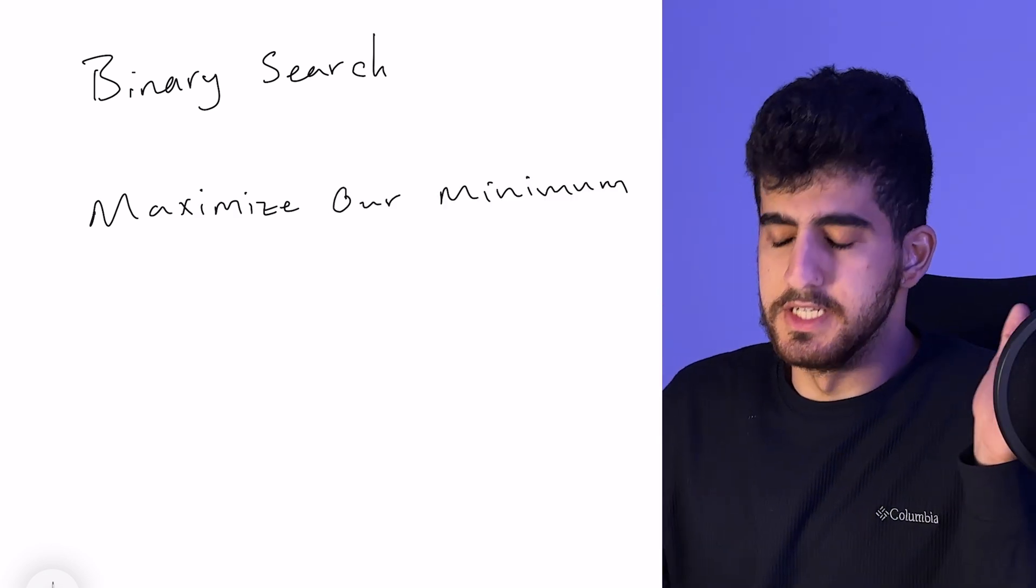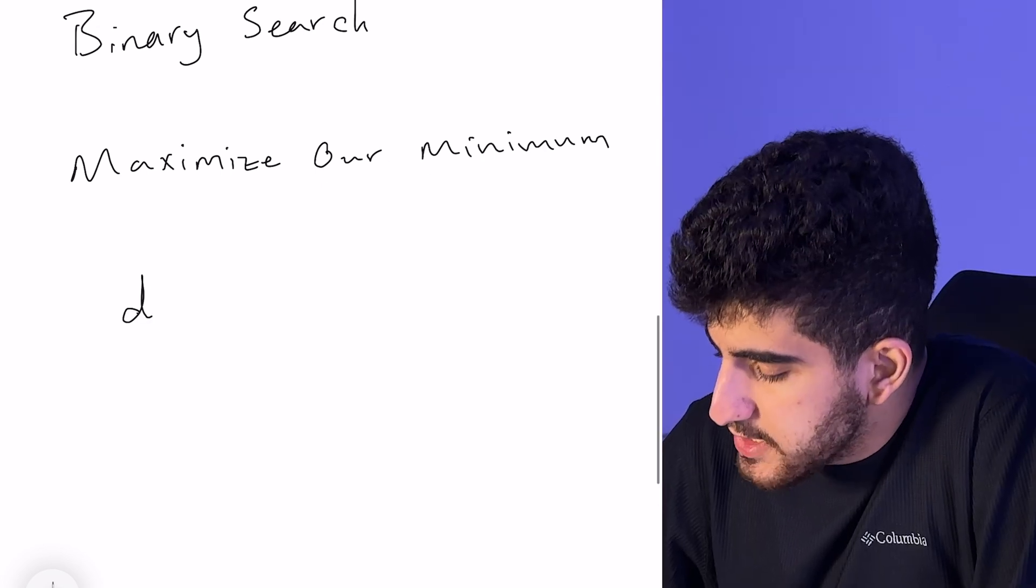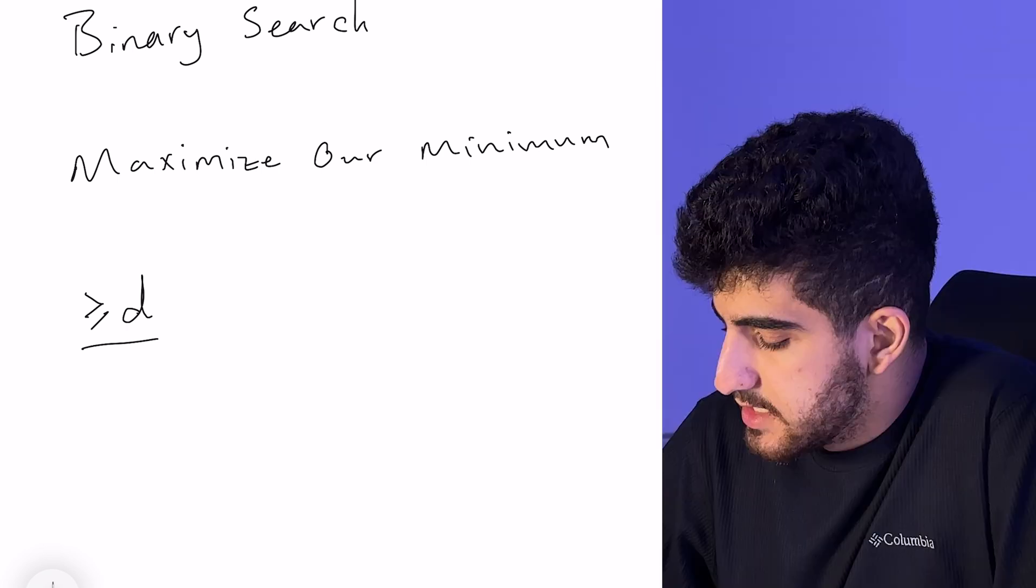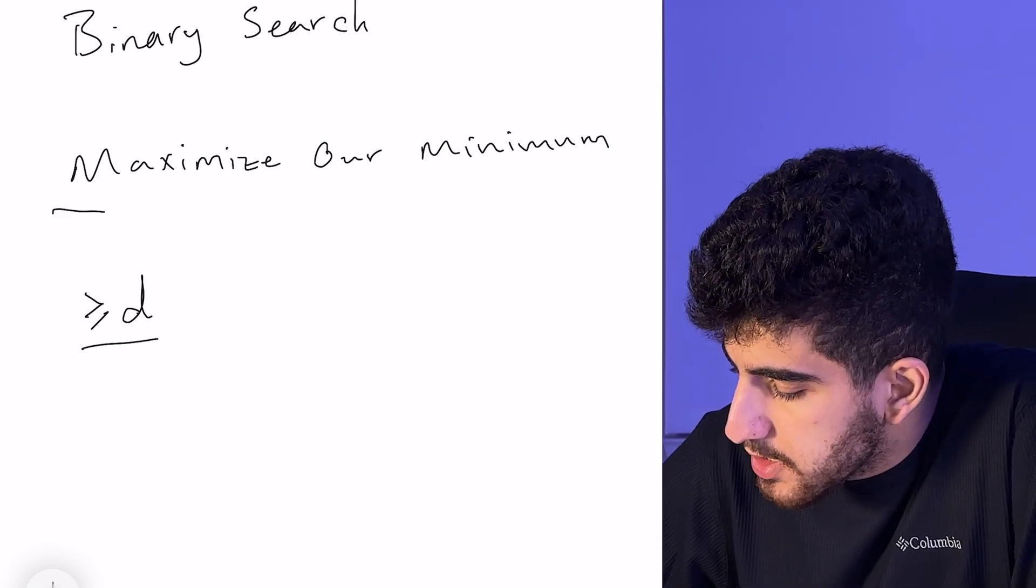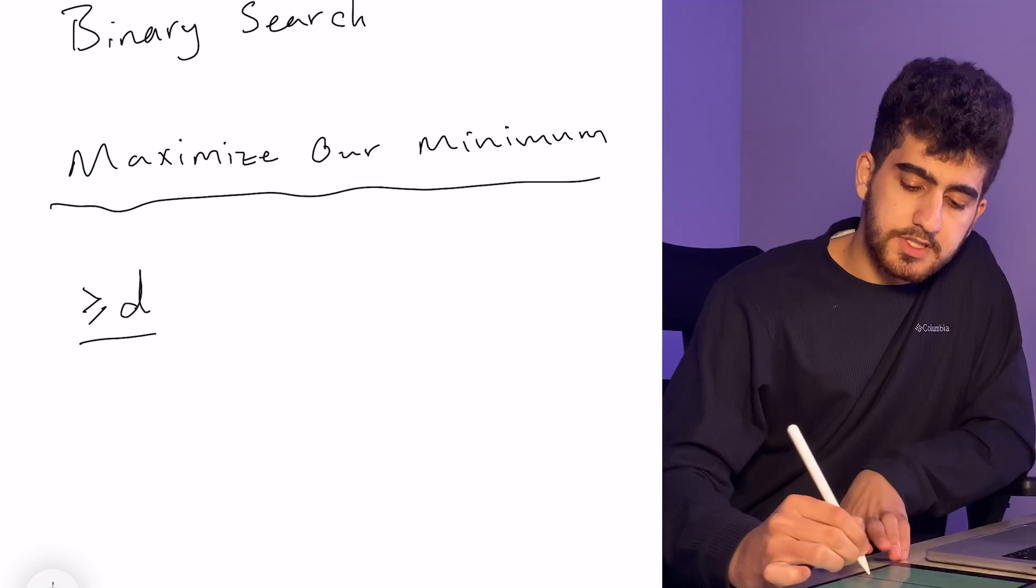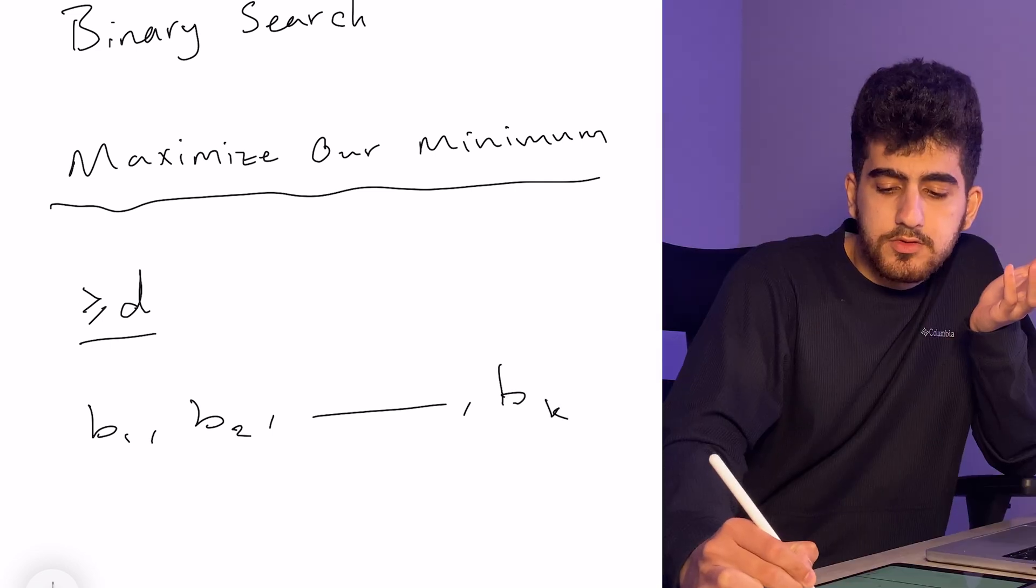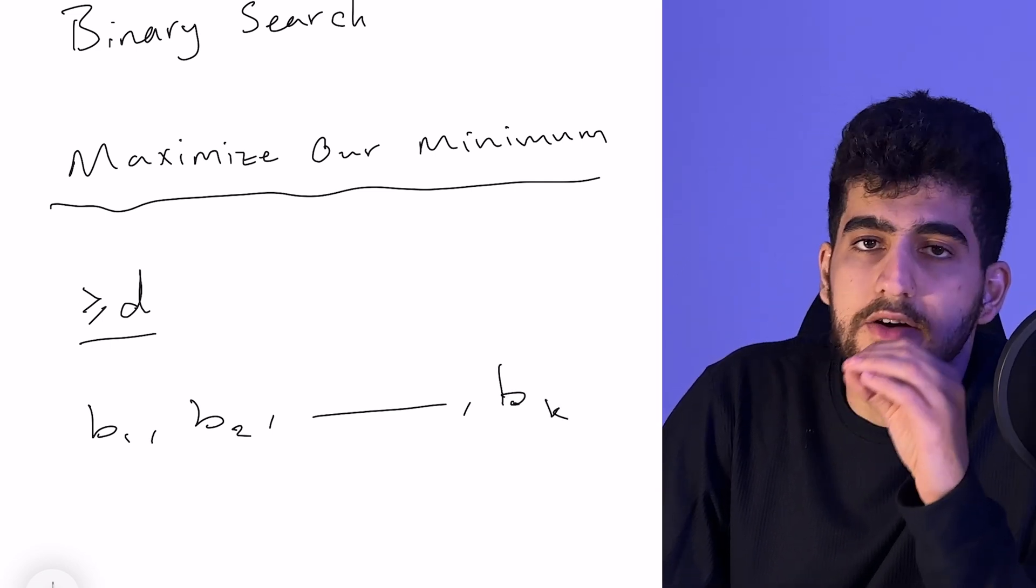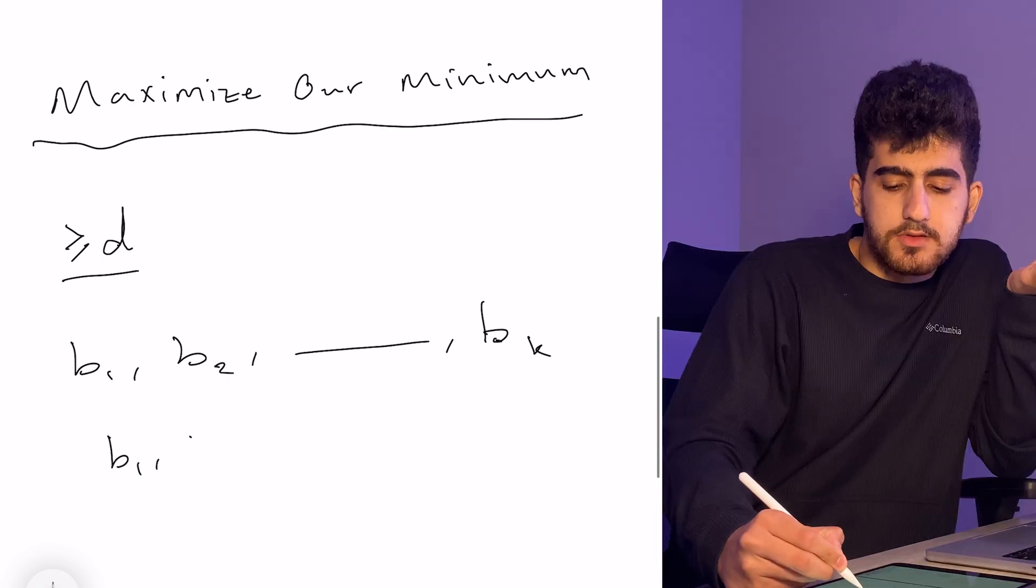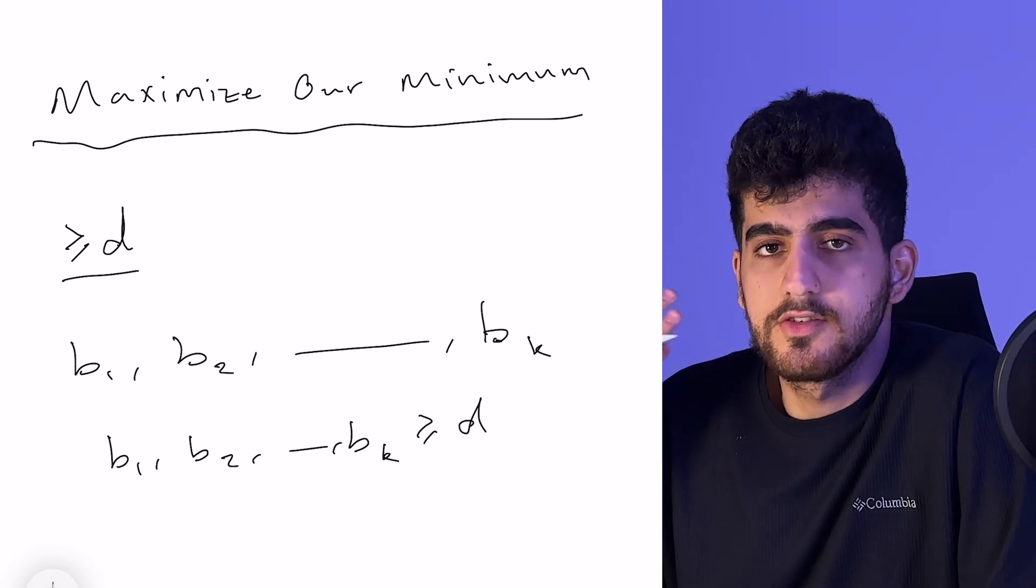Why binary search will be useful here? The reason is that when I have a binary search on d and I want to find out can my answer be greater than or equal to d or not, the point is that I'll be sure that all my numbers should be greater than or equal to d. If I have k imaginary numbers, for example b1, b2 to bk, and I want to see is their minimum greater than or equal to d or not, it means that all of them should be greater than or equal to d. That's the reason we tend to use binary search.